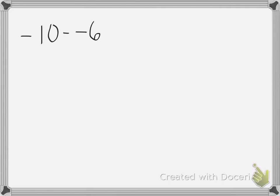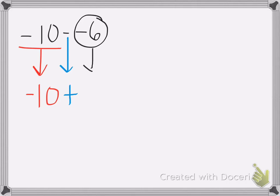It's changing the subtraction problem into an addition problem. The way I do that: this first number, the negative 10, stays the same — the first number always stays the same. Then I look at my next sign: I have a negative sign, and my negative sign will become a plus sign. When I do that, I need to change the last number's sign, so the negative 6 becomes a positive 6 — I flip the sign, change it to its opposite. So now I have negative 10 plus a positive 6, which equals negative 4.